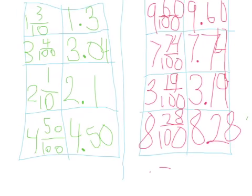1 and 3 tenths in decimal notation is on the left. 2 and 1 tenths in decimal notation is on the right.